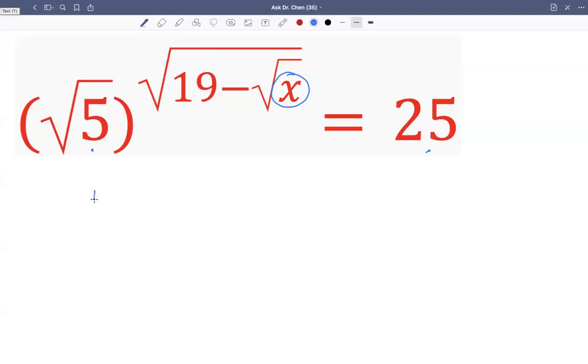Okay so square root of 5 can be written as 5 raised by half, then raised by square root of 19 minus square root of x. And 25 can be written as 5 squared. So when we have two layers of exponents, one base, we multiply the two layers of exponents. So we get a half multiplied by square root of 19 minus square root of x, and that equals to 5 squared.